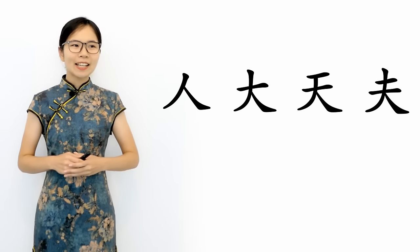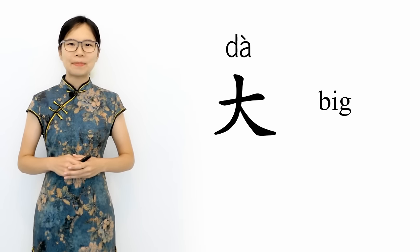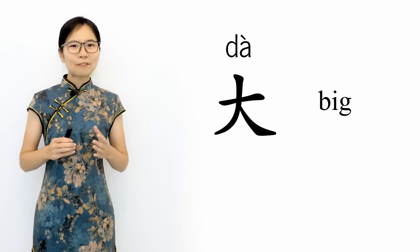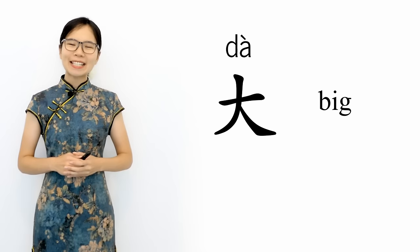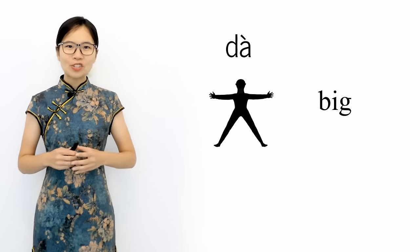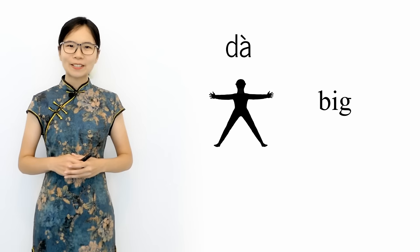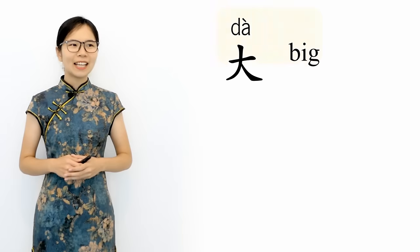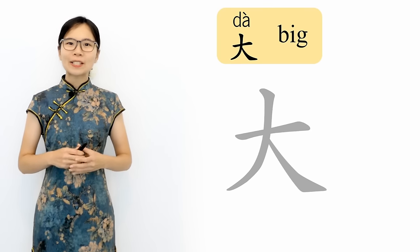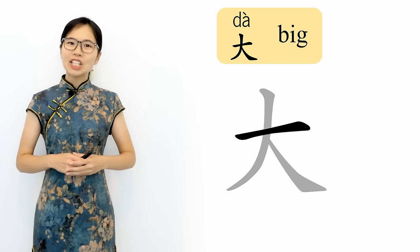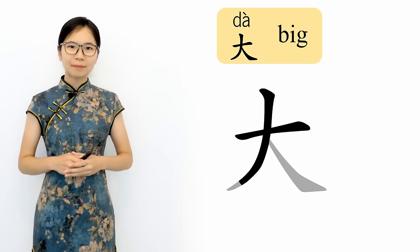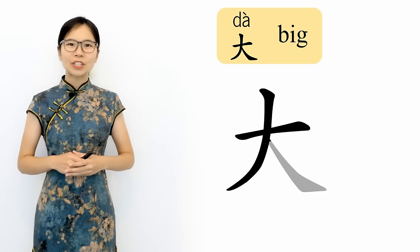Our next character is 大, which means big. For this character, you can imagine a person standing with their legs and arms spread wide, trying to look as big as possible. 大 is written using three strokes: first comes the horizontal line, then just like with 人, a big downward stroke to the left and a shorter downward stroke to the right.